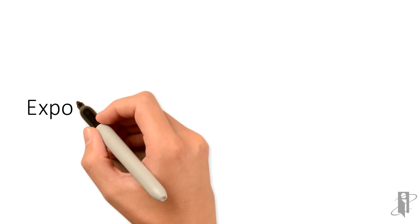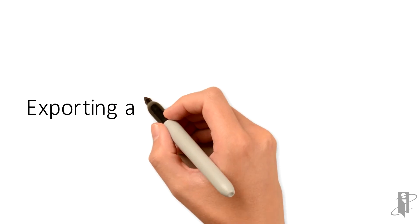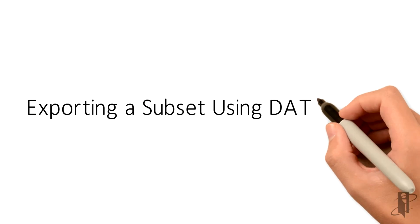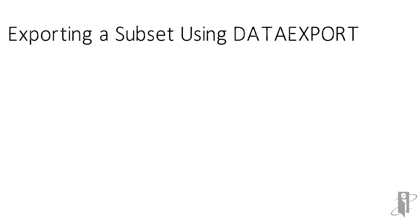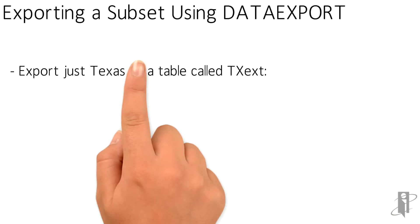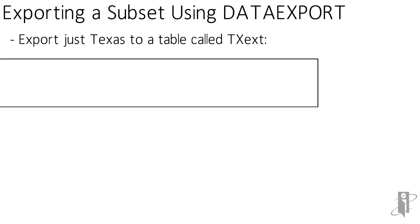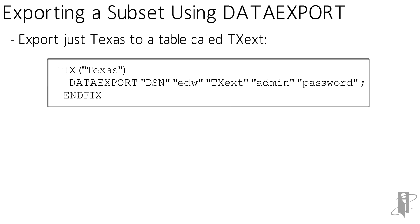We're going to export a subset of our data to a specific table — not the whole database, but a portion. We're going to take just the Texas data, and there's a table out there called txext. Our data source is EDW, the table is txext, username is admin, password is password.